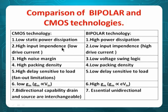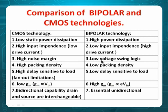Second: CMOS has high input impedance because the input is a silicon dioxide layer, whereas bipolar has low input impedance because the input is forward-biased with high drive current. Third: CMOS has high noise margin, but bipolar has low voltage swing. Fourth: CMOS has high packing density because it is very small with many interconnections, so you can pack more in less space.